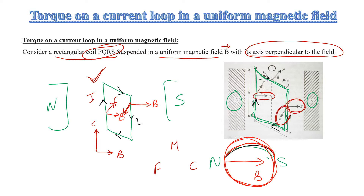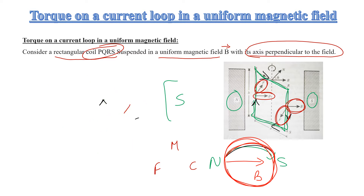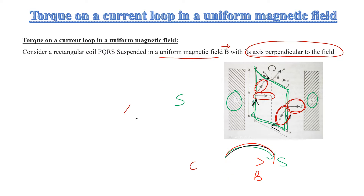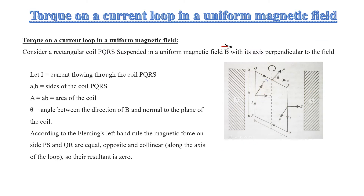There is a current flowing through the coil. The coil name is PQRS — these are the edges of the coil. The current I will pass through and flow through the coil PQRS.